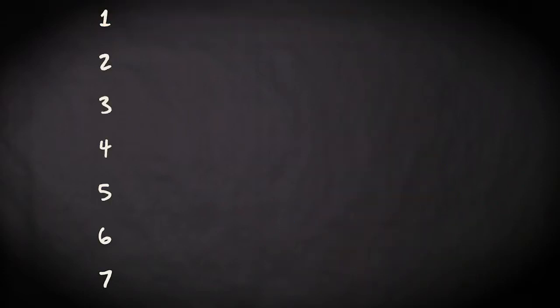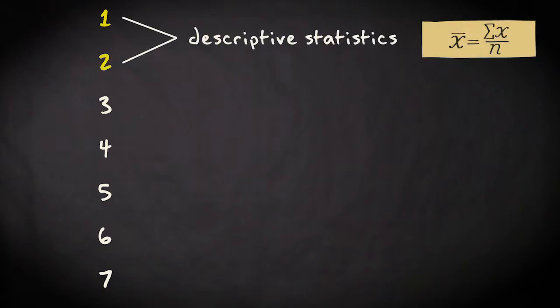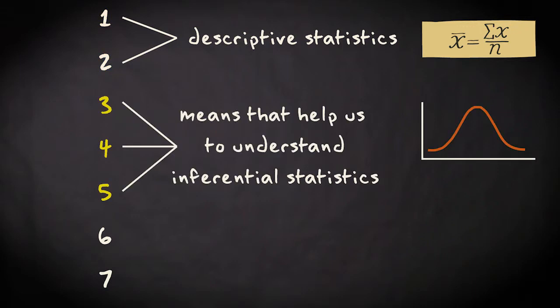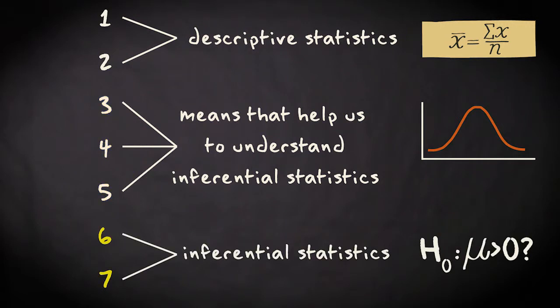In total, there are seven modules in this course. Descriptive statistics will be the topic of the first two modules. In the next three modules, we'll introduce the means that will later help us to employ methods of inferential statistics — we'll talk about probability, probability distributions and sampling distributions. And in the final two modules, we'll introduce methods of inferential statistics, specifically how to estimate a confidence interval and how to conduct a hypothesis test.